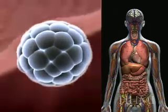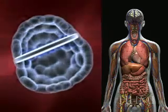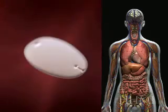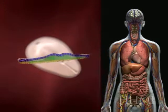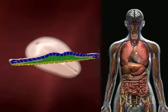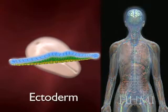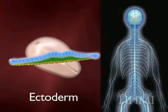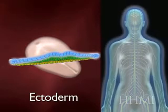If we now look at the embryo after the three germ layers have formed, this video will highlight what comes from the blue germ layer, the ectoderm. You'll see that it makes the nervous system, including the brain, and the skin.